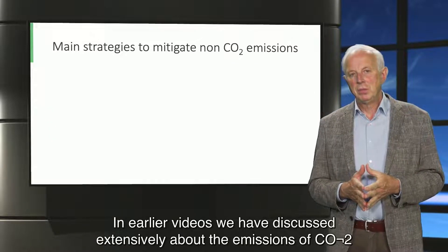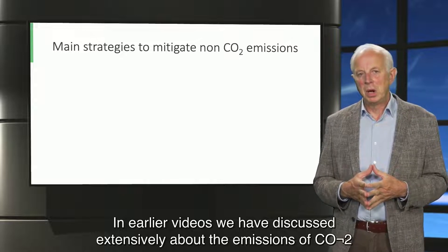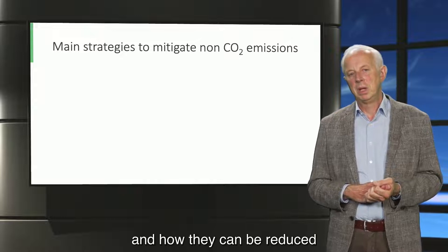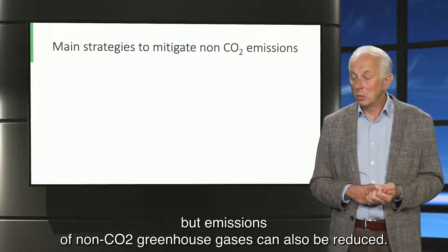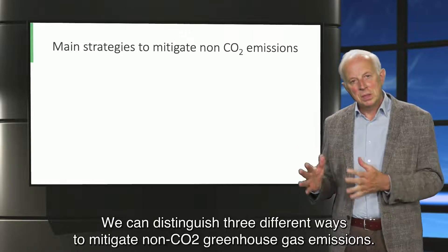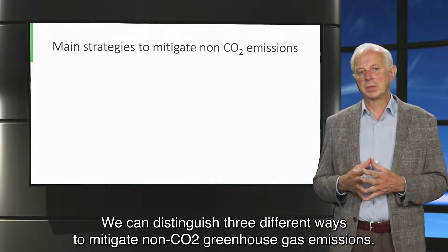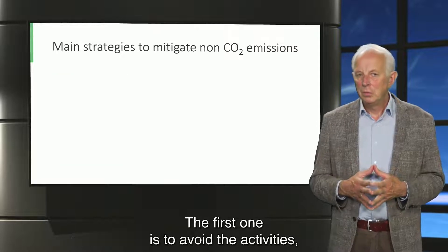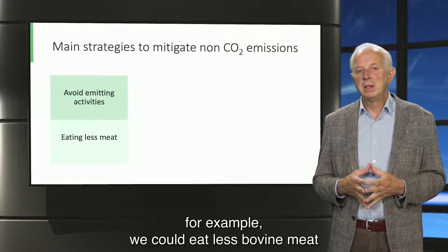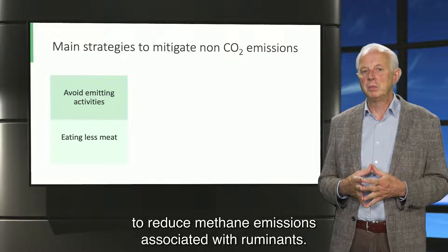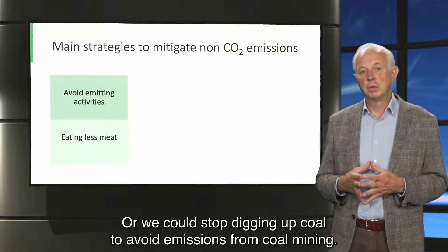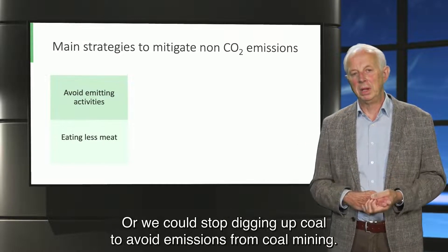In earlier videos, we have discussed extensively about the emissions of CO2 and how they can be reduced, but emissions of non-CO2 greenhouse gases can also be reduced. We can distinguish three different ways to mitigate non-CO2 greenhouse gas emissions. The first one is to avoid the activities. For example, we could eat less bovine meat to reduce methane emissions associated with ruminants, or we could stop digging up coal to avoid emissions from coal mining.